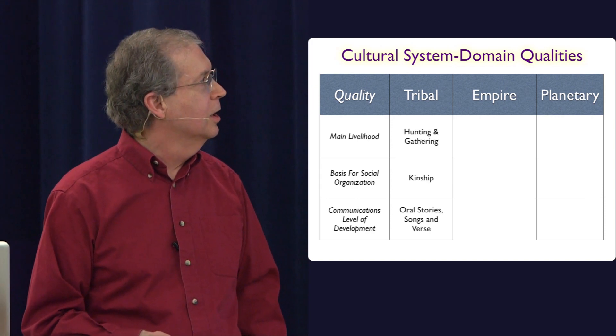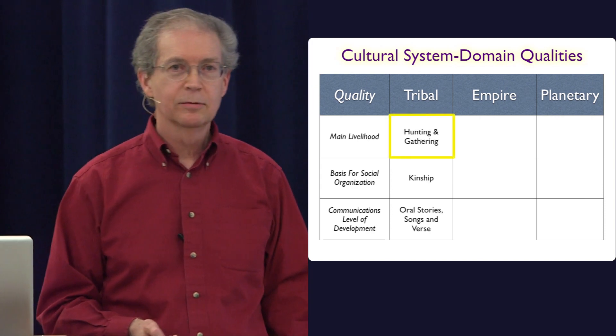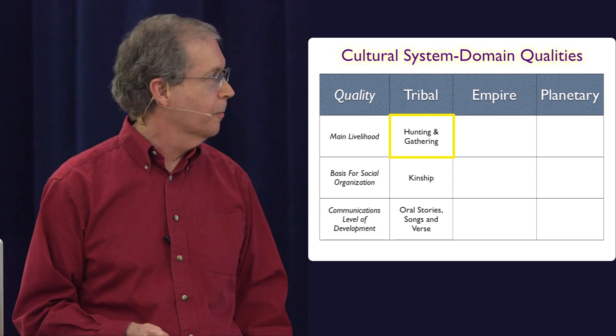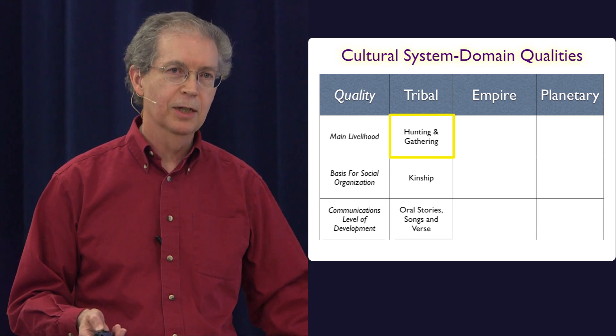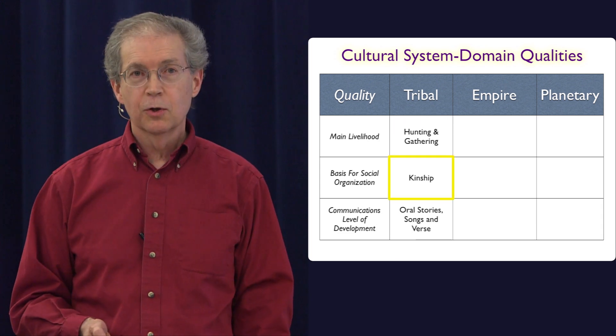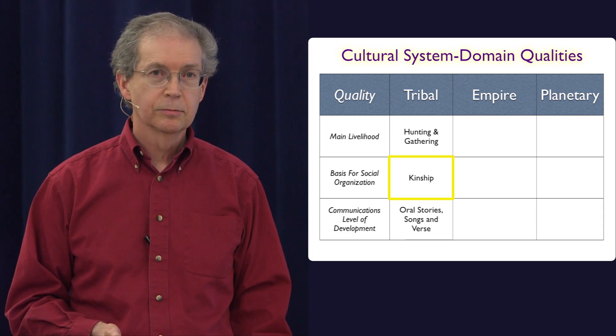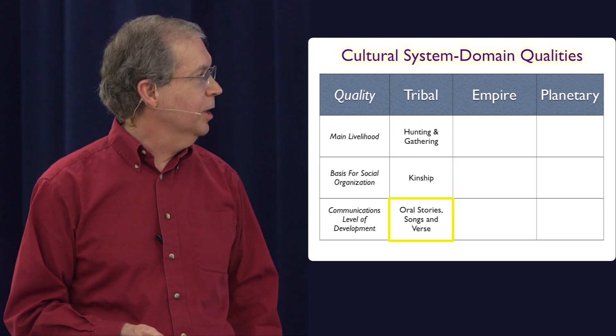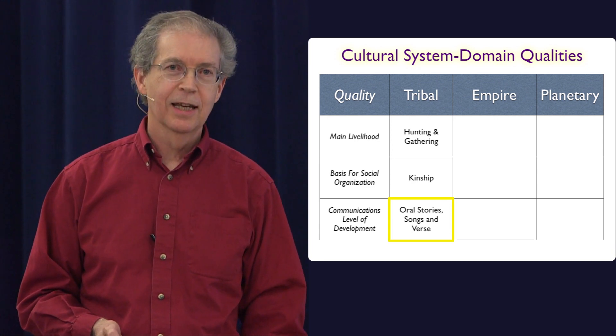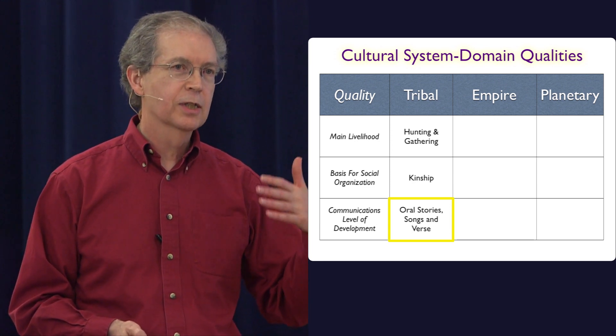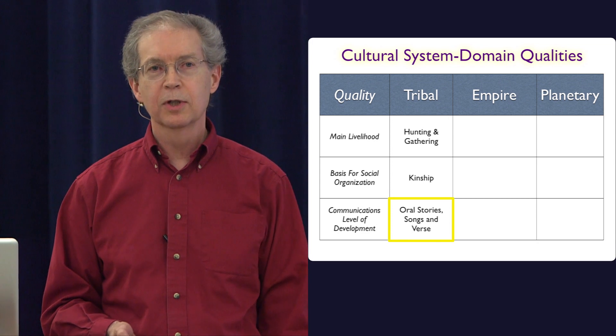So in the tribal, the main livelihood was hunting and gathering, some form of foraging. In fact, it was basically, that was it. The basis for social organization was kinship. And communication was orality, that is stories and voice and everything that you could do with speech.